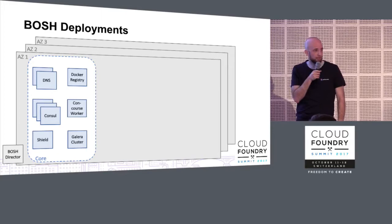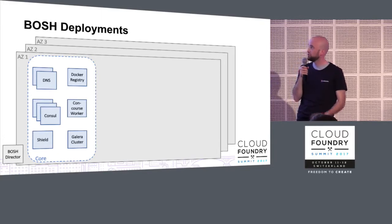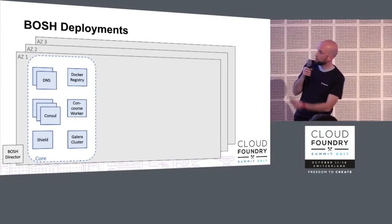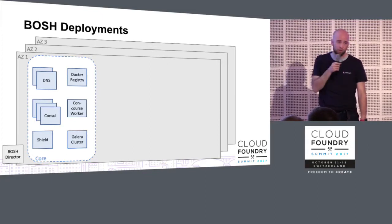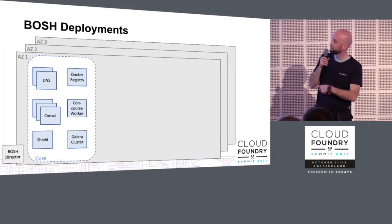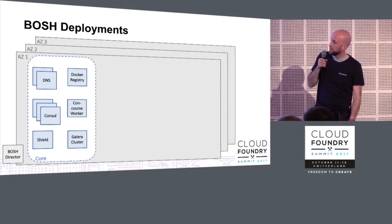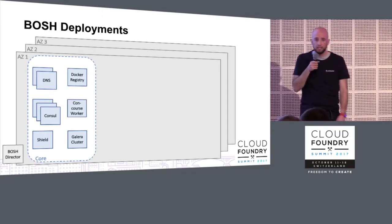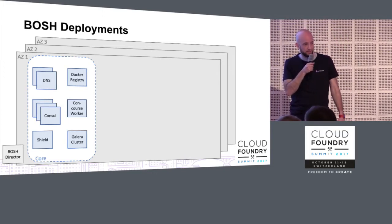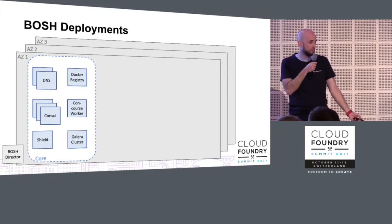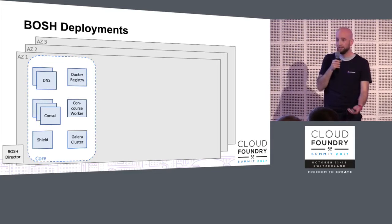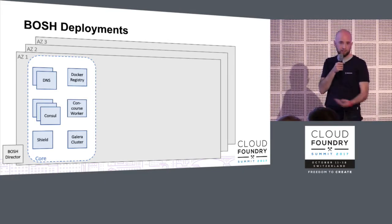We also have a Docker registry per availability zone, which is used by Kubernetes, Concourse, and other Docker-based services. We deploy one Concourse worker per availability zone — the reason for only deploying workers will be explained in the next slide. We also have a Galera cluster and Stark and Wayne's Shield. The Galera cluster serves as the SQL backend for all our RDBMS needs, such as Cloud Foundry's database requirements, and Shield is there to provide backups — the safety net we need to sleep well at night.